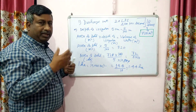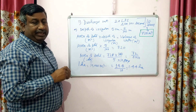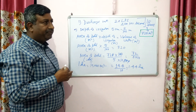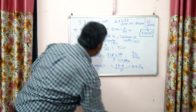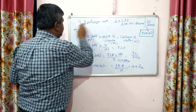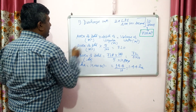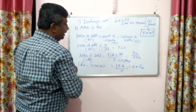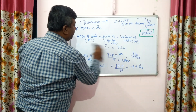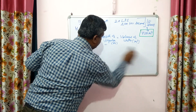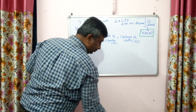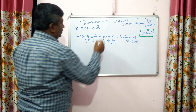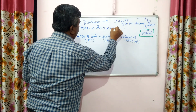Similarly, we can calculate the depth of irrigation if the area is fixed. Suppose a farmer has 1 hectare or 2 hectare area — what is the depth of irrigation? Suppose the area is 2 hectares — convert it into square metres.